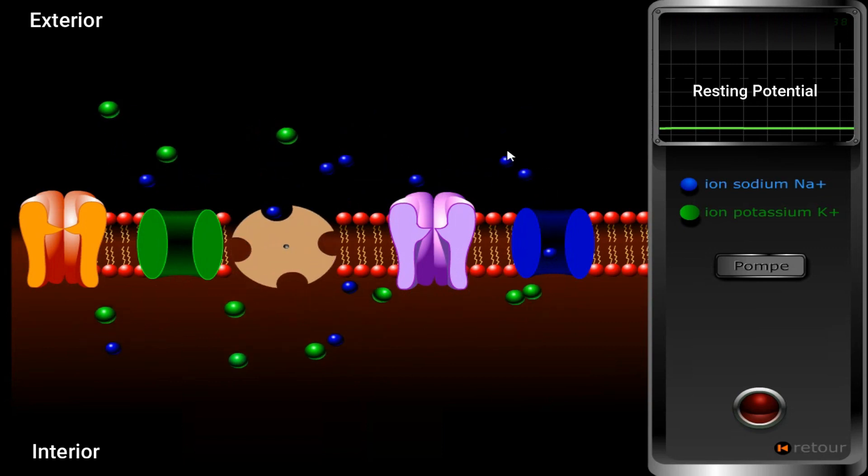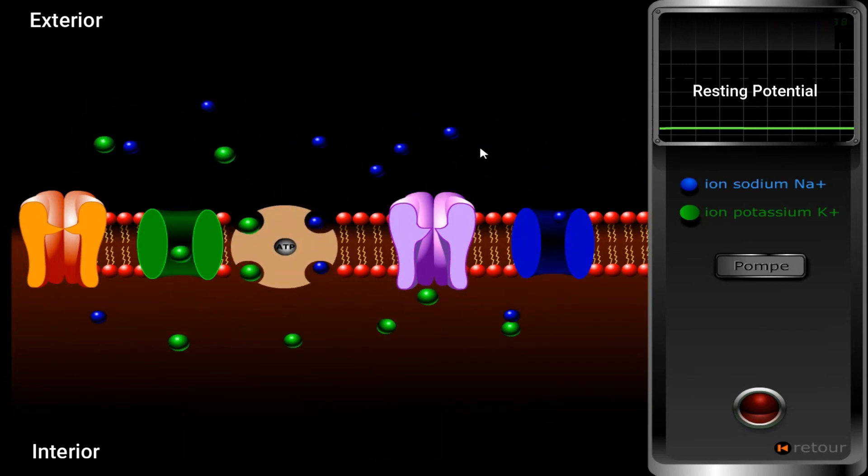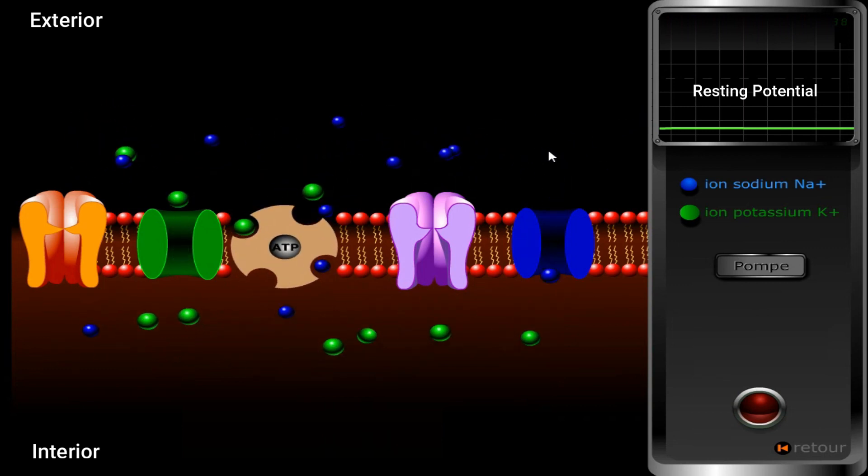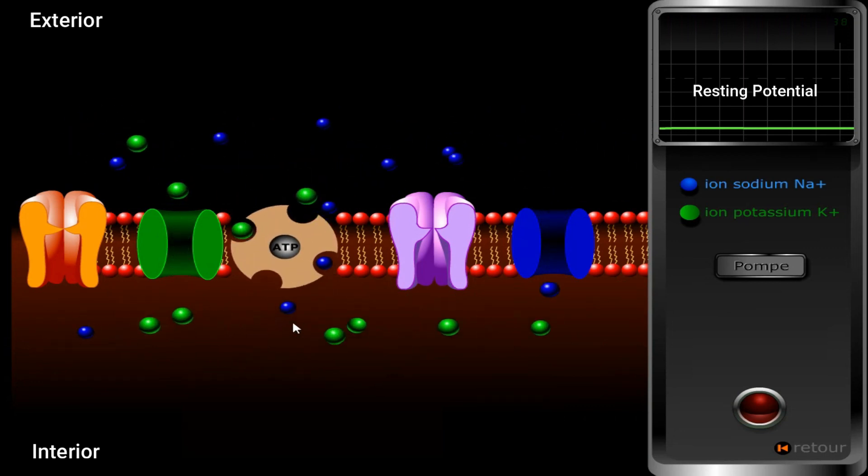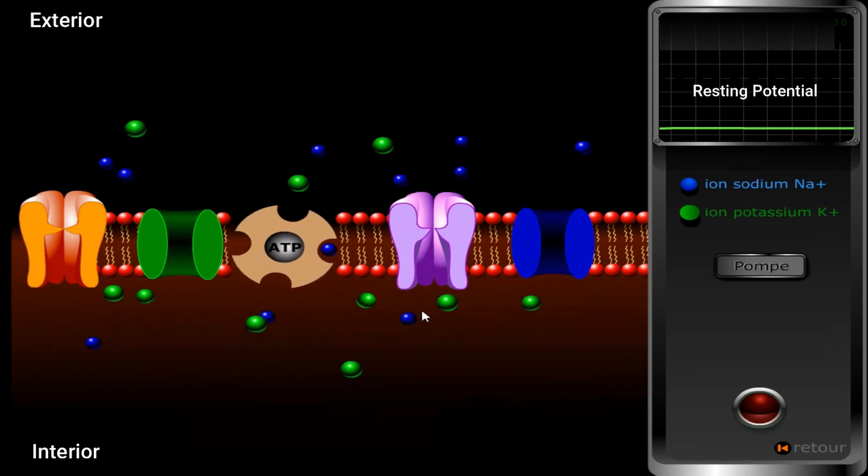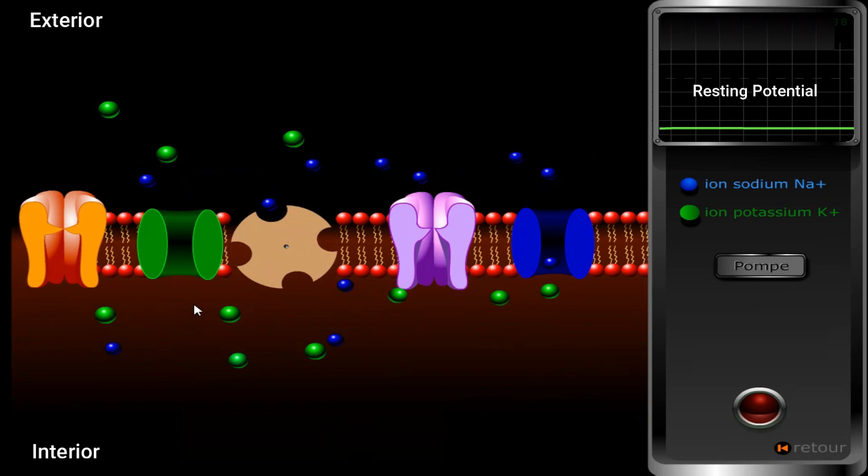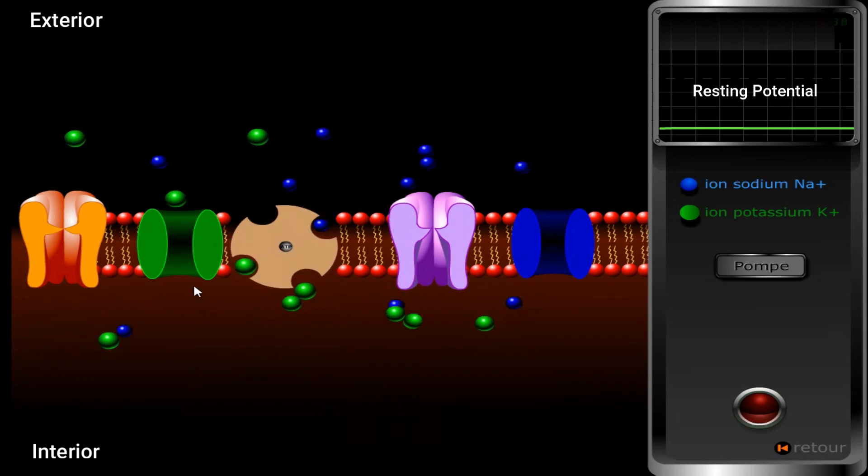As you see, Na+ ions are more numerous outside. That's why they diffuse from the extracellular medium to the intracellular medium. While K+ in green are more numerous inside, that's why they diffuse from inside to outside.